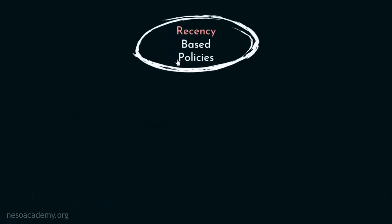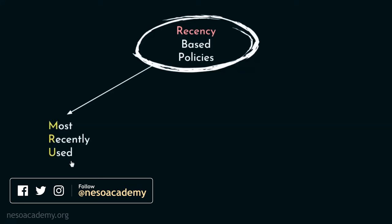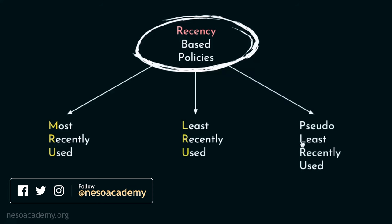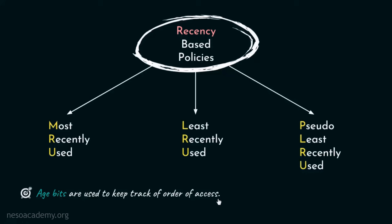Now let's talk about the recency based policies first. Although there are quite a few variations available, we will study about the most important three: starting with the most recently used or MRU, next up is least recently used which is widely known as LRU, and finally we will study the pseudo least recently used or PLRU. Now all of these use age bits, because keeping track of the order of access of the blocks is the key concept behind recency based policies.